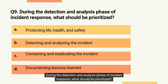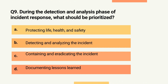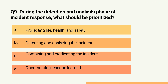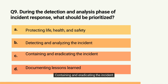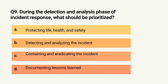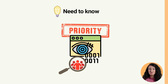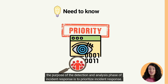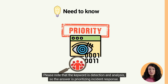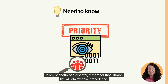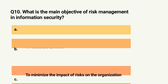Question 9. During the detection and analysis phase of incident response, what should be prioritized? A. Protecting life, health and safety. B. Detecting and analyzing the incident. C. Containing and eradicating the incident. Or D. Documenting lessons learned. The correct answer is B: detecting and analyzing the incident.